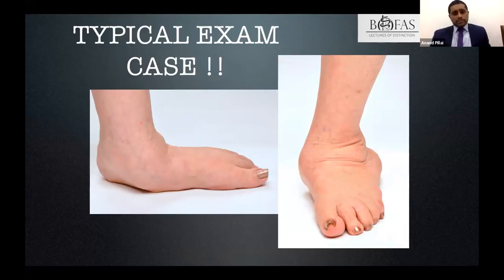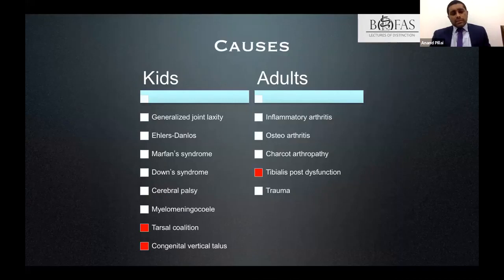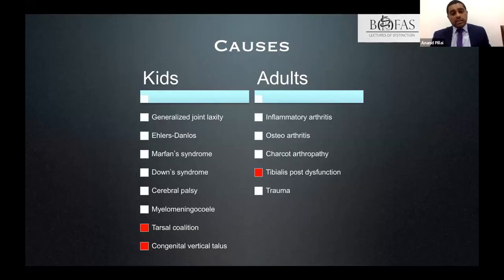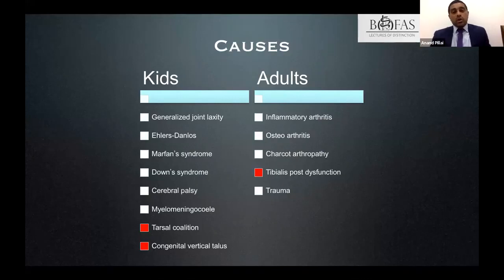It's important to know that the causes of flat-footedness in children and in adults are different. In children, particularly from an exam scenario, conditions to bear in mind include tarsal coalition and congenital vertical talus. In adults, it's mainly tibialis posterior dysfunction. Note that physiological flat foot is not included in either population because it's not pathological — it's a physiological condition.